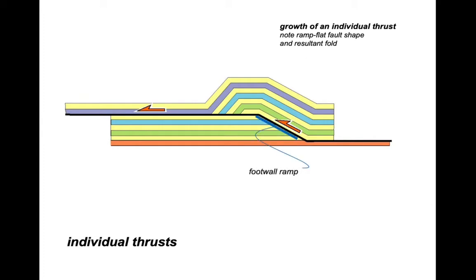We can see the foot wall ramp still remains and the hanging wall ramp has been moved up and over. And we can identify these features by the termination of bedding coming against the fault plane. And as a consequence, the rocks in the hanging wall have been folded up into an antiform. It's called a fault bend fold.